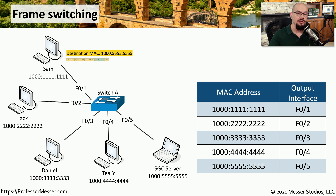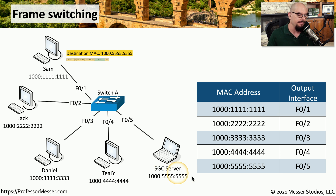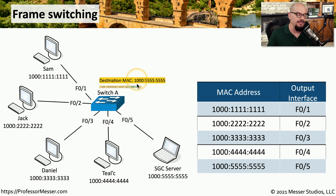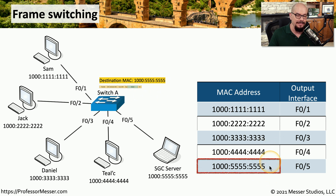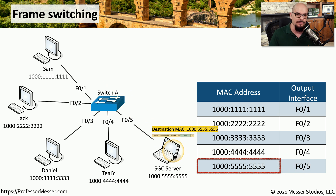The process of sending traffic through a switch network is the same for every Ethernet frame. In this scenario, Sam is sending information to the SGC server, whose MAC address is 1,5555555. We have a switch in the middle with all devices plugged into it. Inside the switch is a MAC address table listing all MAC addresses and the interfaces where those addresses are connected. When Sam sends traffic with a destination MAC address of 1,5555555, the switch looks up that address, identifies the output interface, and sends it to the server with that MAC address.